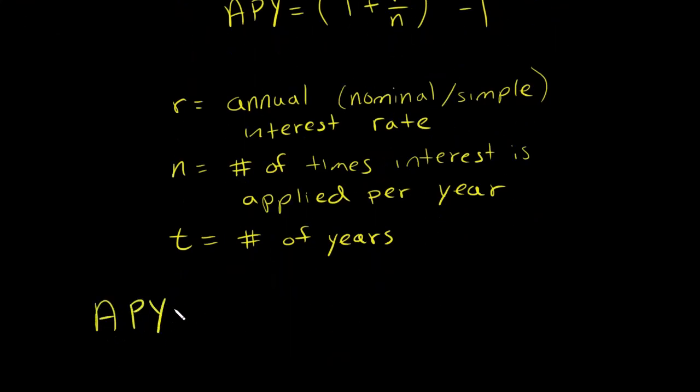APY equals your rate of return. So that would be the amount that you have at the end of a certain amount of time minus the amount that you start, divided by the amount that you started with. By definition, this is what APY is.